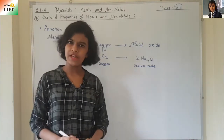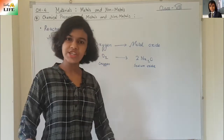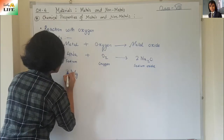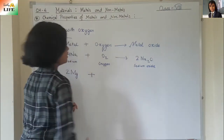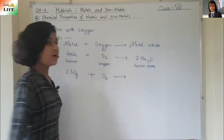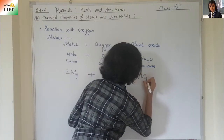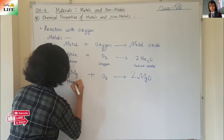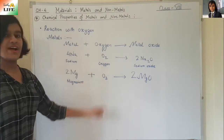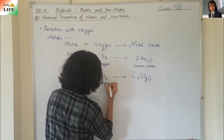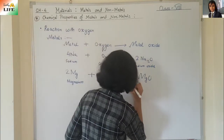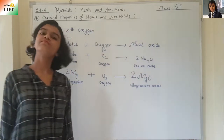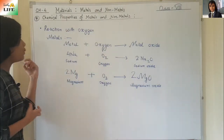Now let's take another example of magnesium. Magnesium will react with oxygen to form magnesium oxide. So: 2Mg + O₂ forms magnesium oxide. It forms two magnesium oxide — 2MgO. Magnesium reacts with oxygen to form magnesium oxide. This is how metals react with oxygen.